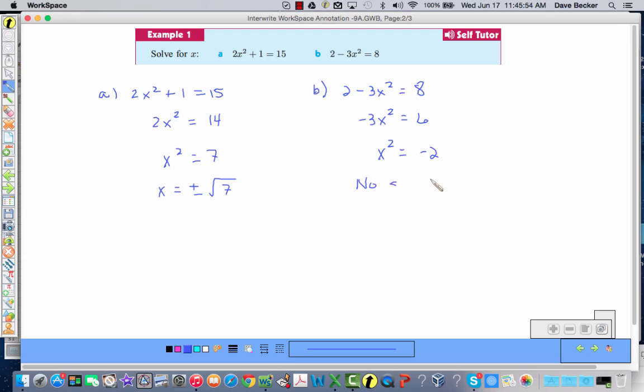So we would just say no solutions. And if you think about it, or another way to think about it is, there is nothing that I can square that is going to give me a negative number, because you're multiplying a number by itself, so it's either going to be a positive times a positive, which is a positive, or a negative times a negative, which is also a positive, so it's just not possible.